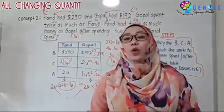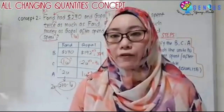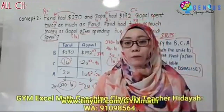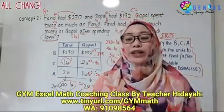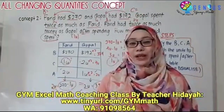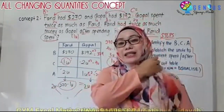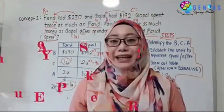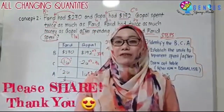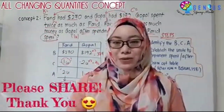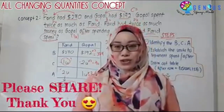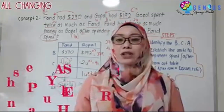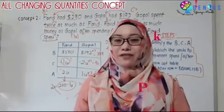Remember, for All-Changing Quantity concepts, identify the BCA first. It will be much clearer if your child already knows the before, change, and after keywords. Try this at home and guide your child through it. If you find this video beneficial, please share it — it's good for P6 and P5 students. This has been Teacher Hidayah of Genius Young Minds, where we help your child score math within a very short period of time. Goodbye!